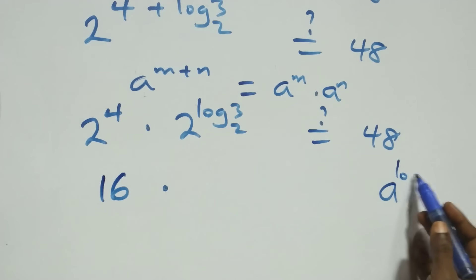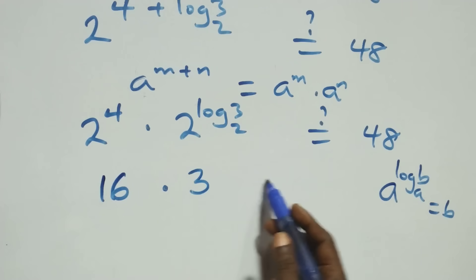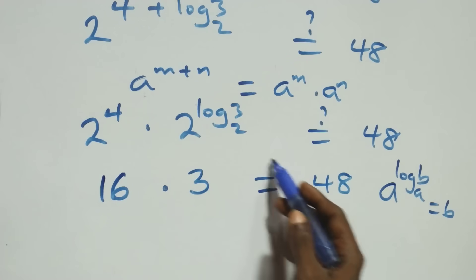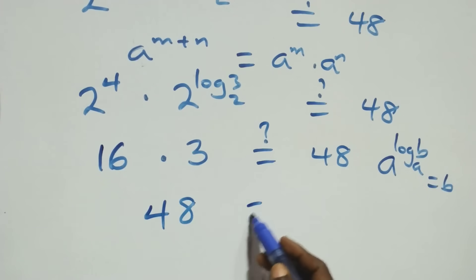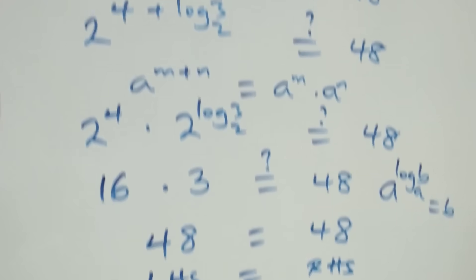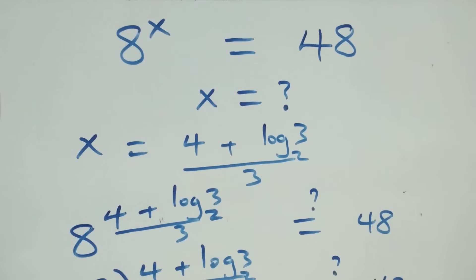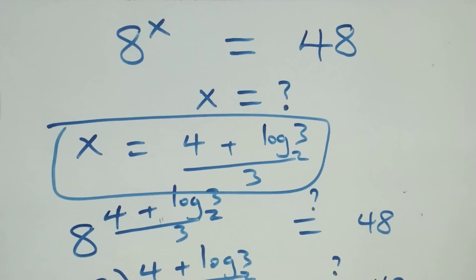We have a raised to power log b to base a, which equals b. At this, we have 2 raised to power 4 times 3, times 2 raised to power log₂3, is it equals to 48 on this side? And 16 times 3, of course, is 48. It is equals to 48 on here. That is left hand side equals to the right hand side. And therefore, we conclude that x equals to (4 + log₂3) all over 3 satisfies this given problem. Thank you for watching, don't forget the steps, subscribe for more videos and turn the notification bell, share this video, give it a thumbs up and put your comments. See you next class and bye for now.